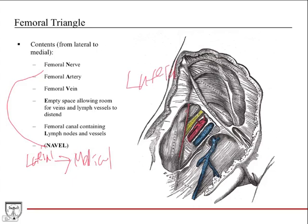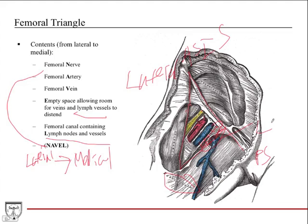From lateral to medial: you have the femoral nerve as the first structure encountered laterally, then the femoral artery, then the femoral vein. Then there's an empty space which allows veins and lymph vessels to distend — arteries are high pressure, veins are high volume, and since venous return from the lower extremities is against gravity, blood can pool there and the vessels need room to expand. Medial to this empty space, you have lymph nodes and lymph vessels.